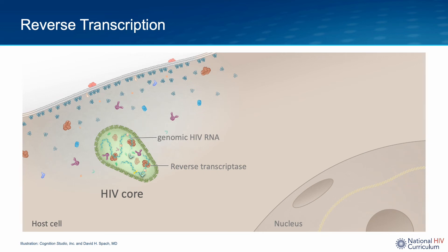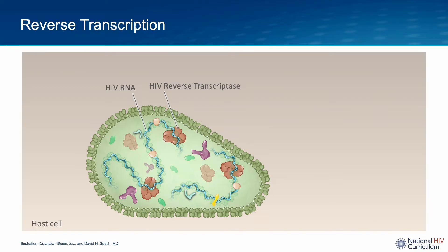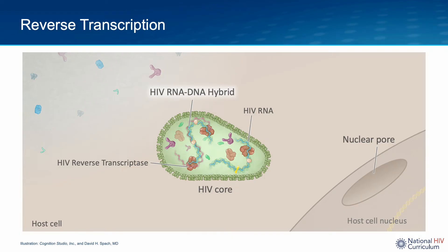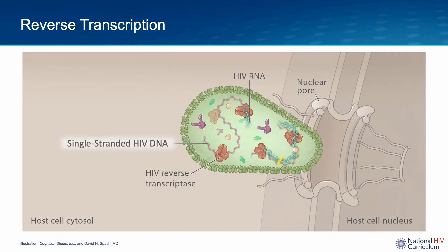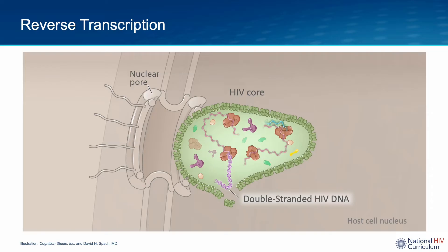Most of the reverse transcription takes place inside of the HIV core, starting soon after the core enters the cytoplasm. As the HIV core migrates toward the nucleus, early reverse transcription is underway, generating intermediate hybrids of HIV RNA and single-stranded HIV DNA. As the HIV core reaches the nuclear pore, more single-stranded HIV DNA is forming. The core enters the host nucleus mostly intact, at which point HIV double-stranded DNA has started to form. The rigid double-stranded DNA is believed to cause some disruption in the outer shell of the HIV core.